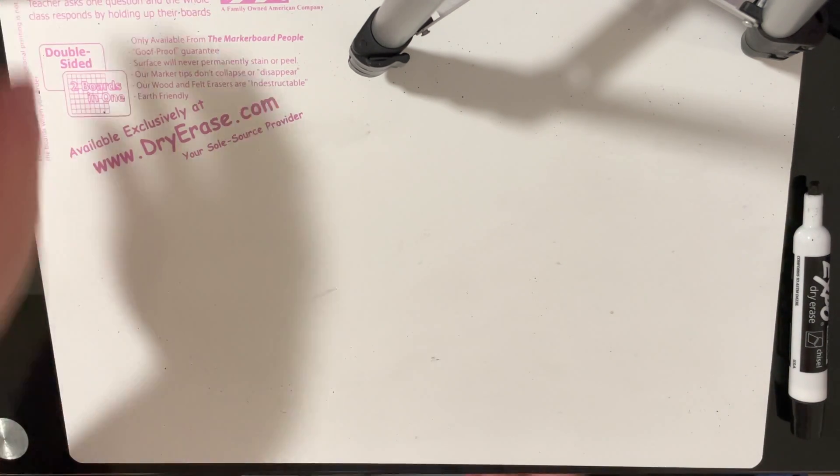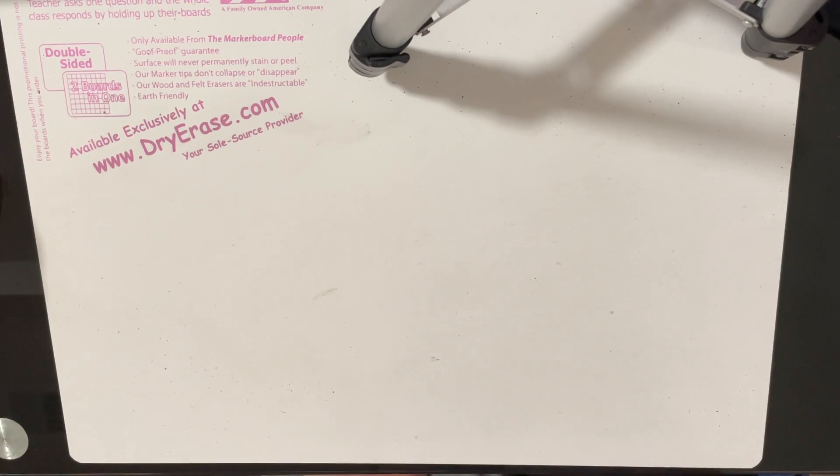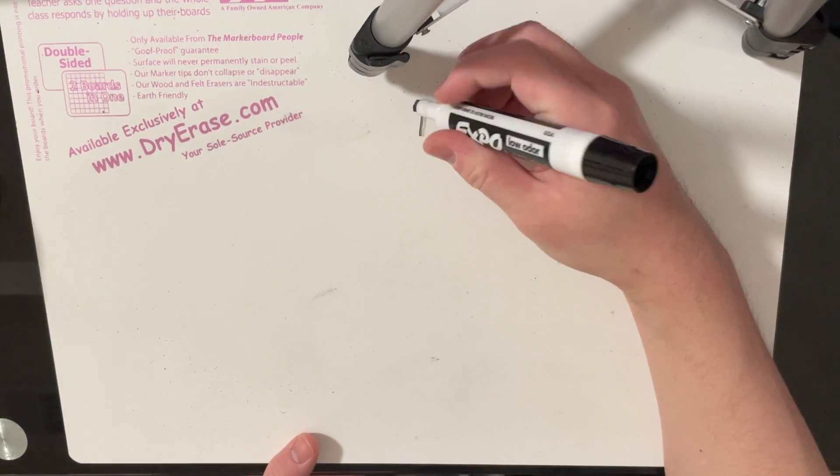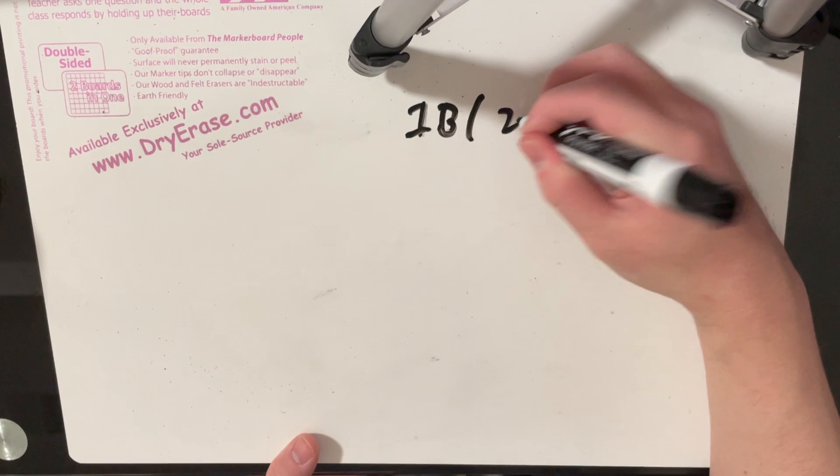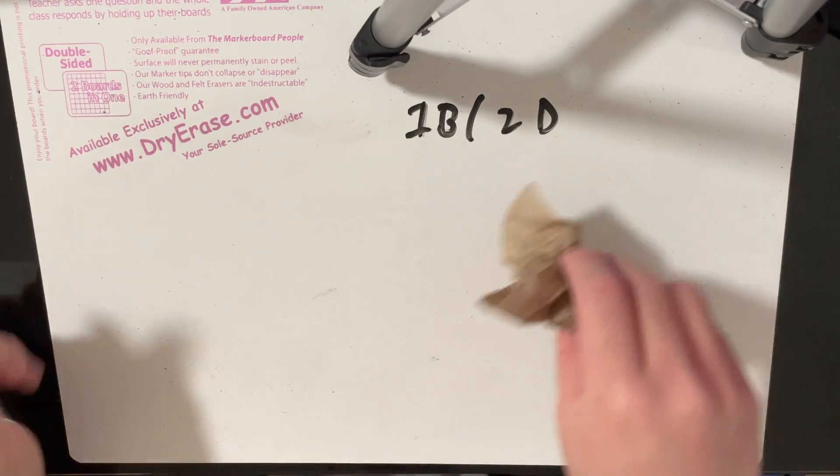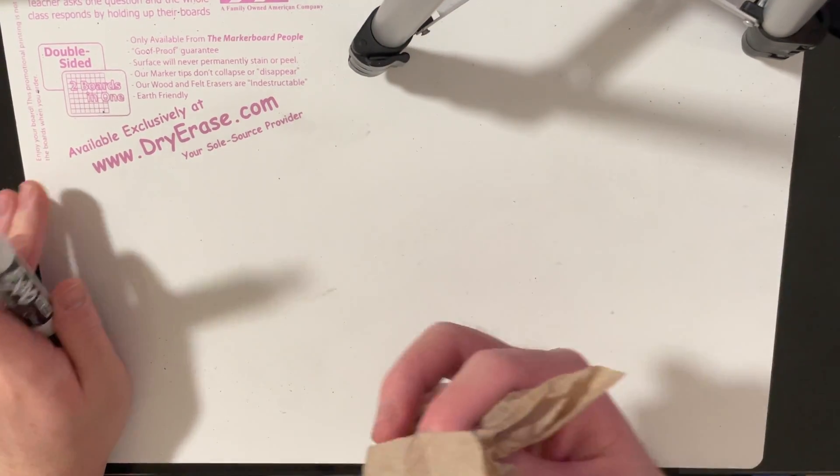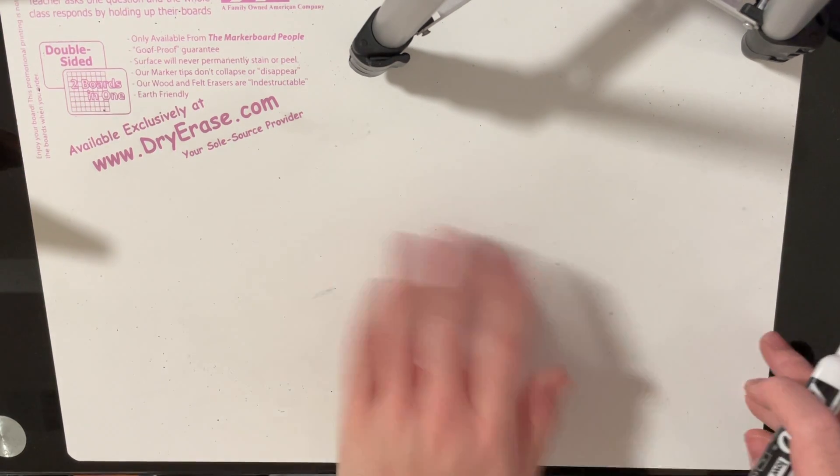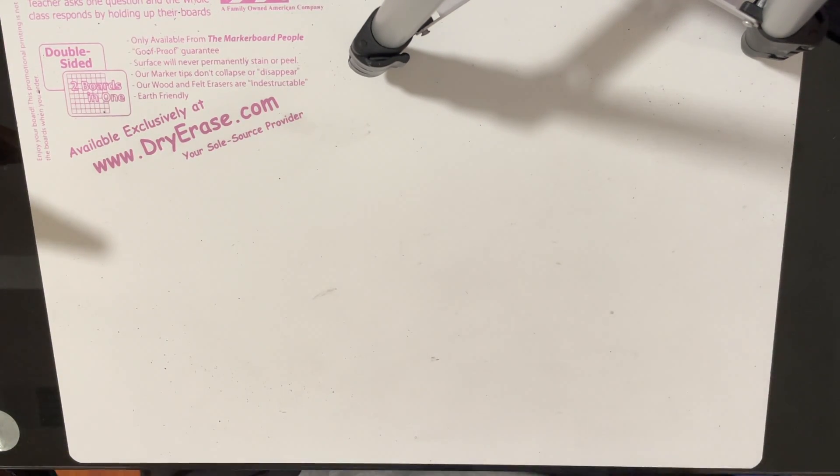Hey everyone, this is my explanation for problem 1b/2d of round 736. This is called Integer Have Friends. I'm going to assume you've read the problem. If you haven't read the problem yet, definitely read it and think about it yourself a little bit before you watch this video. You should always at least think about a problem before looking at my editorial.